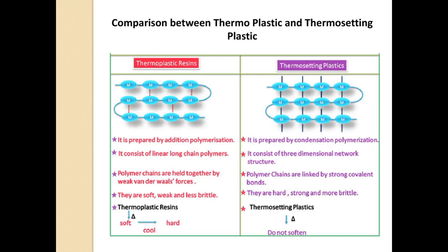Comparing thermoplastic and thermosetting plastics: the bonding in thermoplastics involves weak van der Waals forces, whereas in thermosetting plastics it is strong covalent bonds. Thermoplastics are prepared by addition polymerization, while thermosetting plastics are prepared by condensation polymerization — we will study these polymerization types in subsequent lectures. Thermoplastics consist of linear long chain polymers, while thermosetting plastics have a three-dimensional network structure.